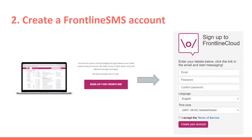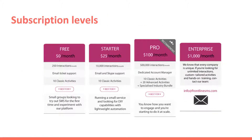Next, you need to create your Frontline SMS account. Go to their website and from the home page, click on the sign up for Frontline button. Once you enter your details to create an account, Frontline will send you an email to verify. Once your account is verified, you'll get a message letting you know you are on a free trial period while you get to know the program. Depending on your needs, you will likely have to upgrade to one of their subscription levels, but to get started, the free option is a good way to get to know the program.